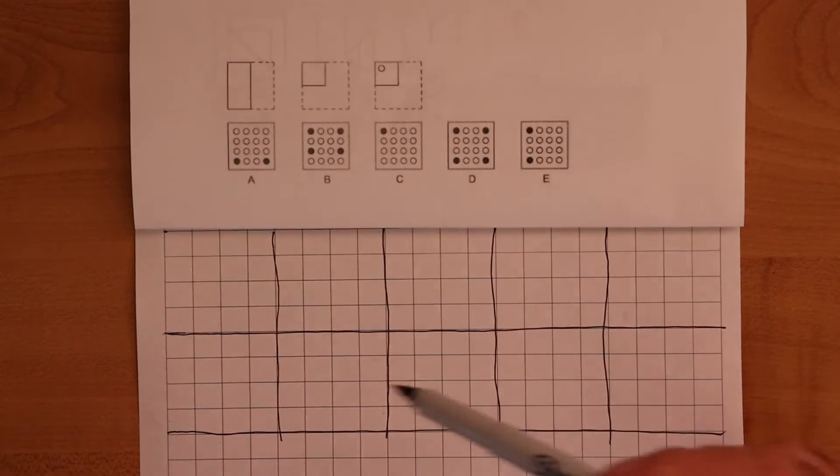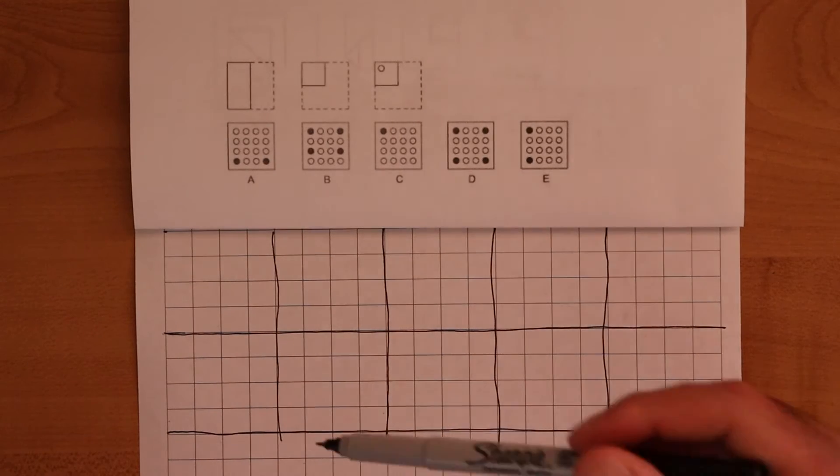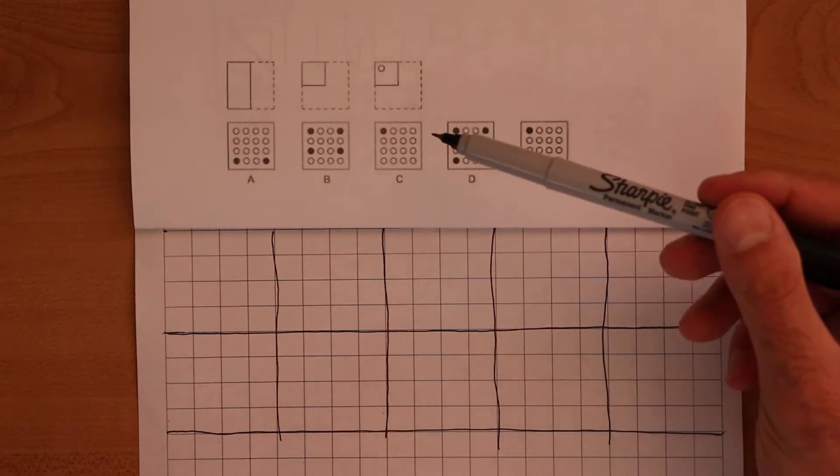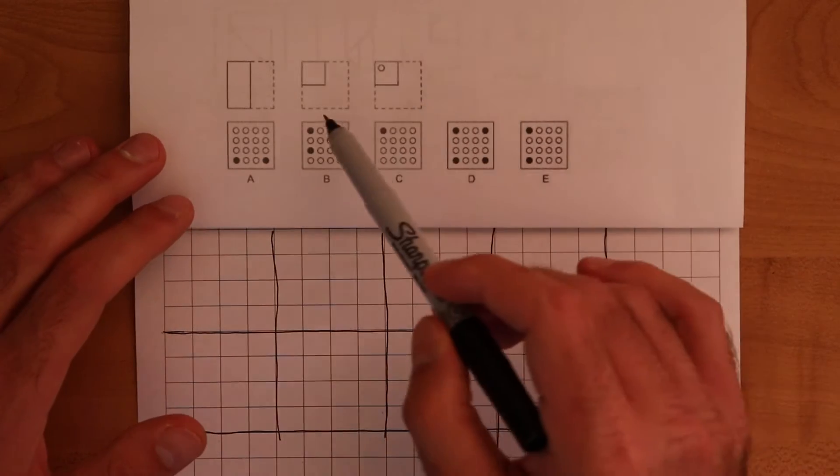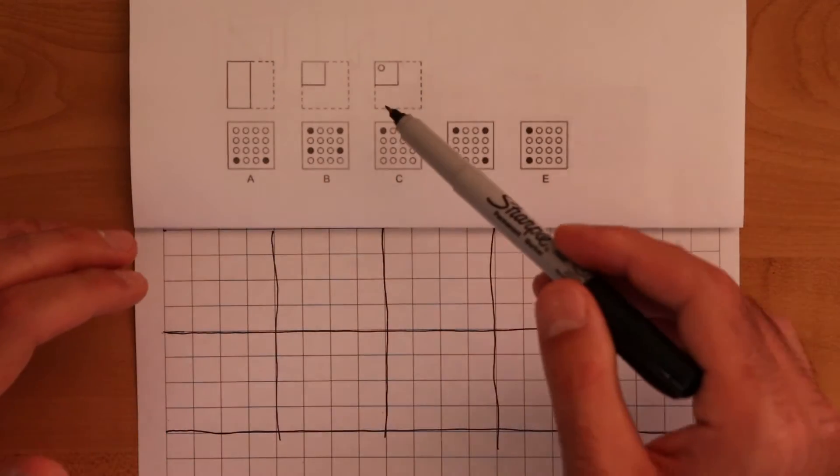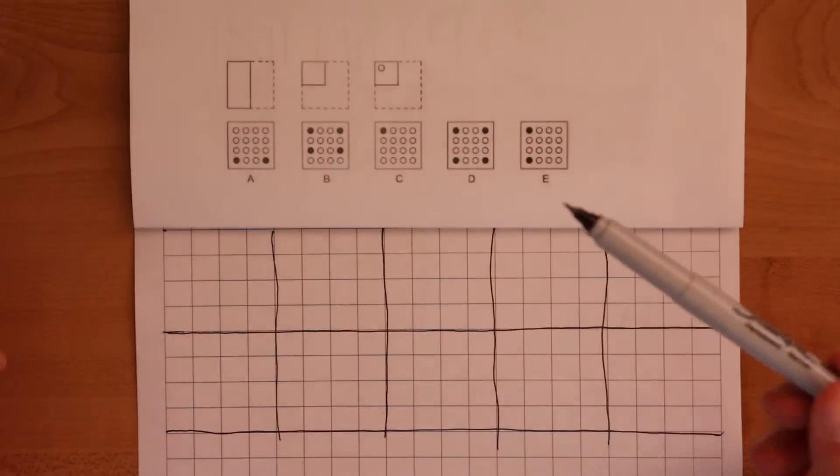So once we have our hole punching boxes made, now we'll go into the actual solving problems and talking through the strategy. This strategy is called the axis of symmetry strategy. The reason it's called that is because an axis of symmetry is just a line that divides a shape or an object into two equal halves. We essentially want to be thinking about these diagrams and folds as just splitting things in half.